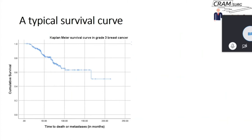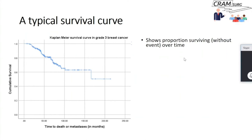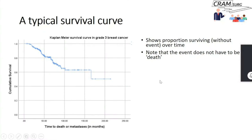These curves show the proportion surviving without the event happening over time. Importantly, the event does not have to be death — a survival curve could represent occurrence of a hernia, or reoccurrence of a hernia after repair. All time-to-event data are typically called survival curves. Sometimes the event can be a composite event, like either death or metastasis — any event you're particularly interested in, not necessarily death.